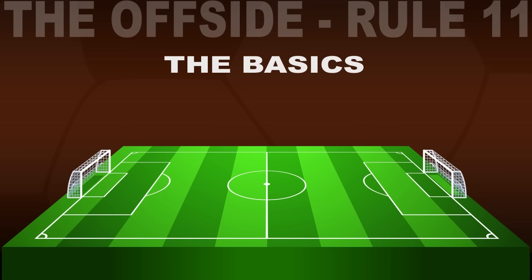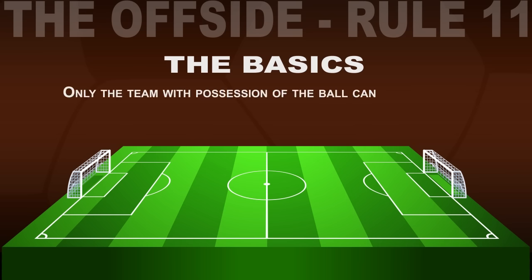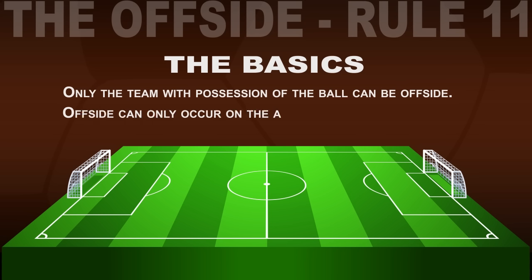There are some basic rules to understand first. Only the team with possession of the ball can be offside, so a defending team cannot be called offside. And offside can only occur on the attacking side of the field.